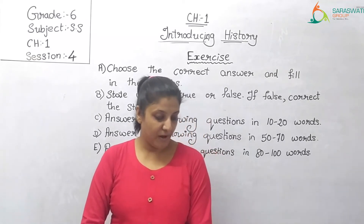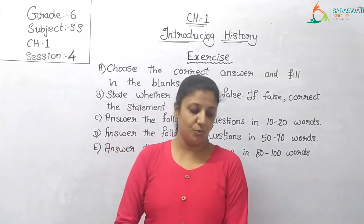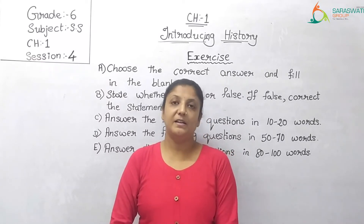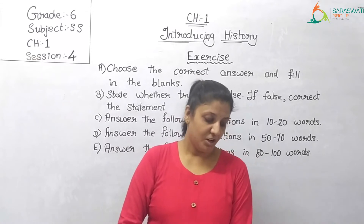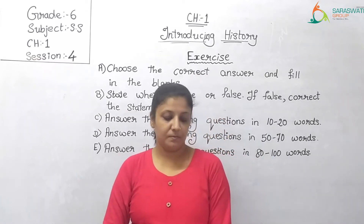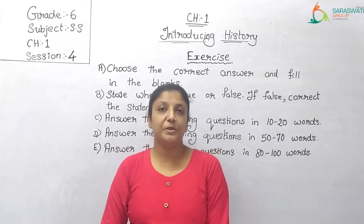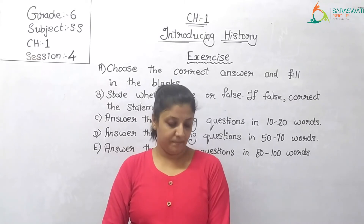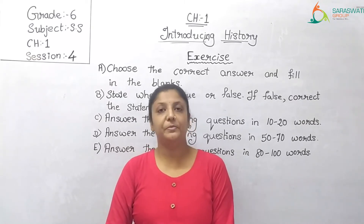Question number 5: The southern gate of Sanchi Stupa was added by dash. Options are Ashoka, Chandragupta Maurya, Satakarni, and Samudra Gupta. The answer is option C: Satakarni.